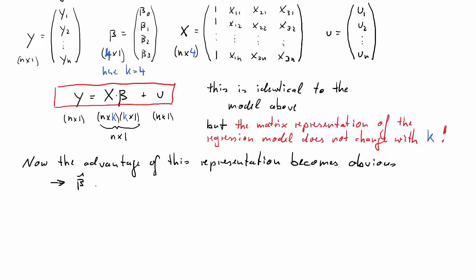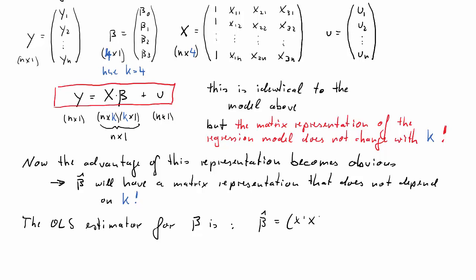Beta hat, which is the estimator for beta, the representation of beta hat will also not change with respect to k. So that beta hat, we will have a matrix representation, or that will be the equivalent of covariance y, x, divided by variance of x. But that will not depend on k. And remember we said in the previous representation that did depend on k. So what is the OLS estimator of beta? The expression for beta hat is x prime x inverse x prime y.